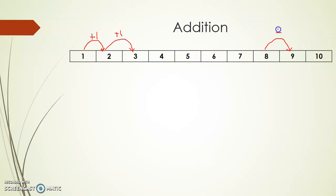Now the next number is obtained by adding 1 to this number. 2 plus 1, we get 3. Every number is obtained by adding 1 to the previous number — 3 plus 1 gives us the next number in the row.